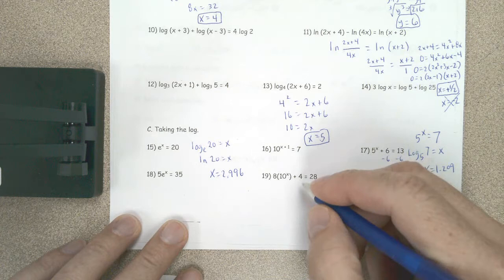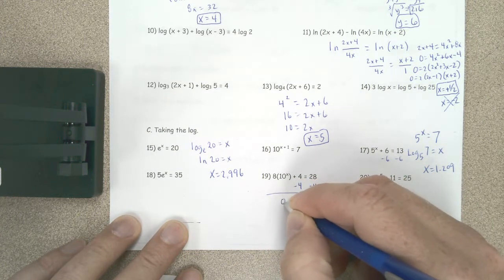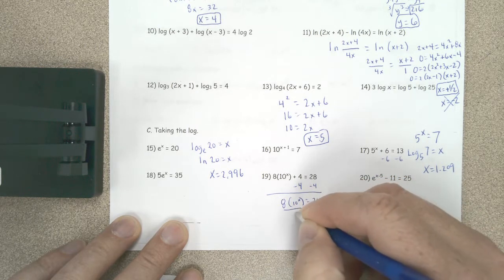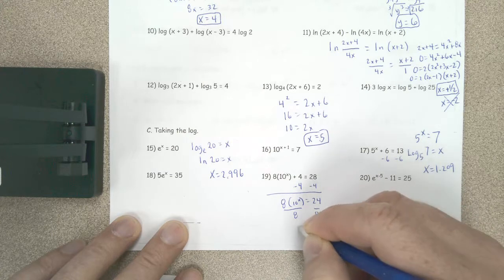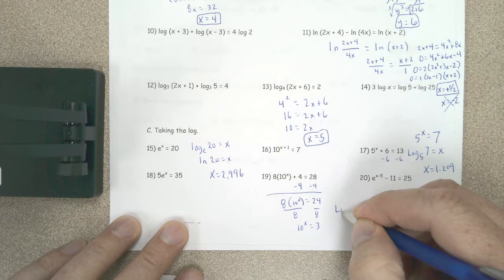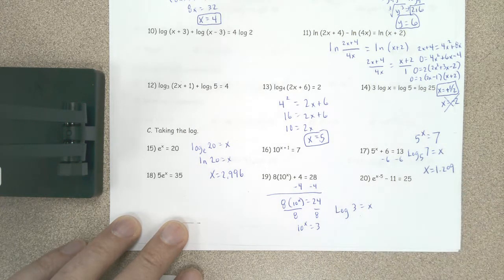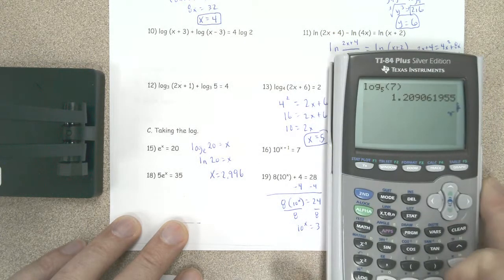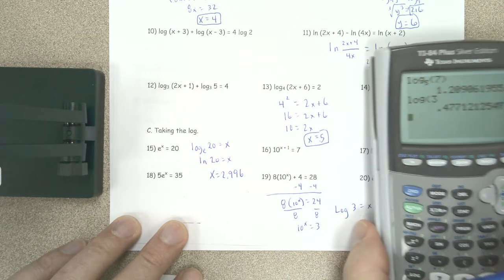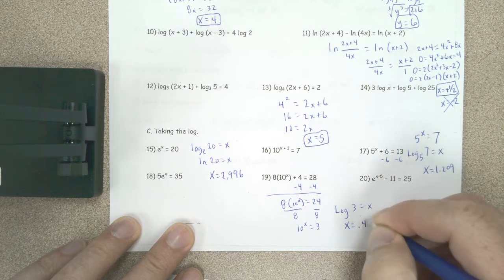Number 19: I subtract 4 from both sides, so 8 times 10 to the x equals 24. I divide by 8, so 10 to the x equals 3. Putting it into log form, log of 3 equals x. Since that's base 10, I can just use the log button. Log of 3 gives 0.477, so x is equal to 0.477.